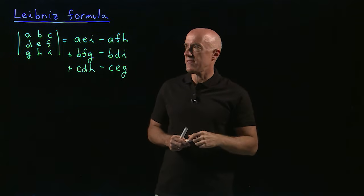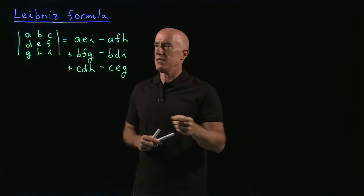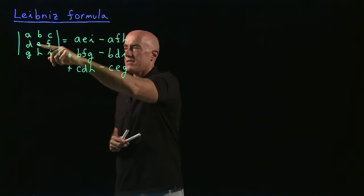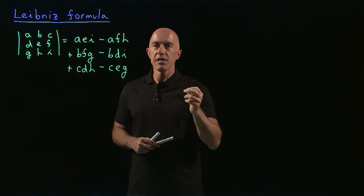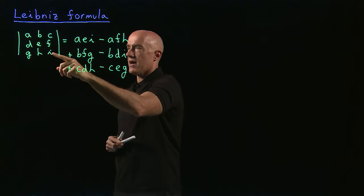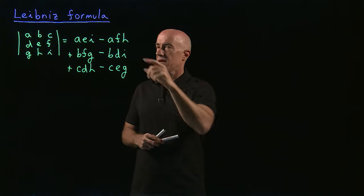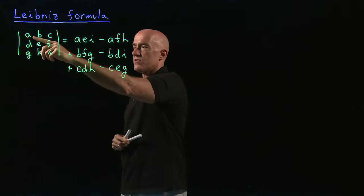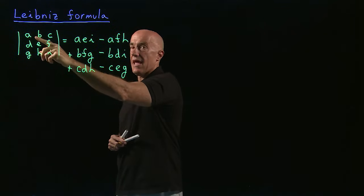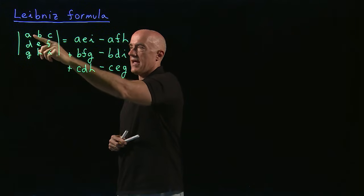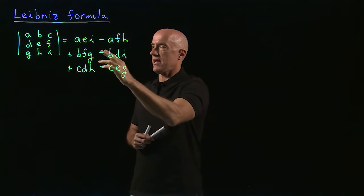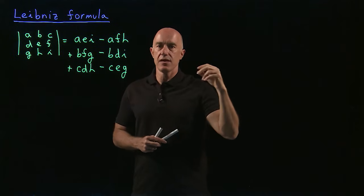There are 6 terms here. Let's look at them more closely. A, E, I has A coming from the first row, E from the second row, I from the third row. And E is in a different column than A, and I is in a different column than A and E. Same with A, F, H — A comes from the first row, F from the second, H from the third, and F is in a different column than A, and H is in a different column than A and F. Every term here is in a unique row and a unique column.